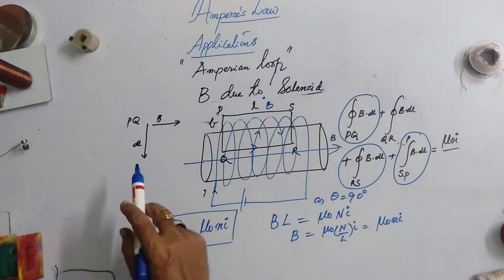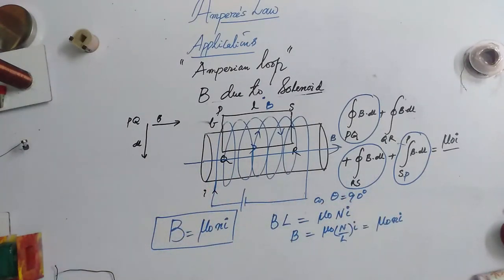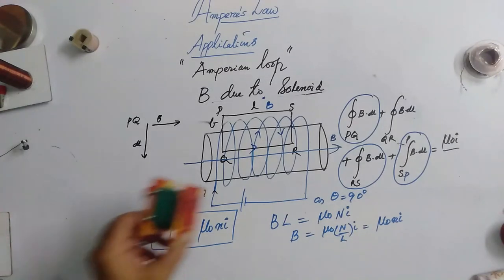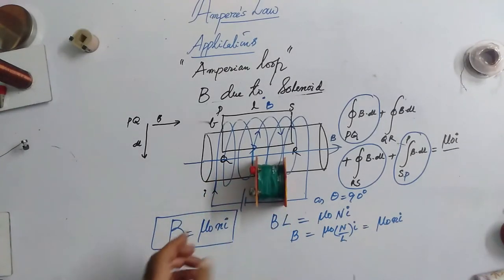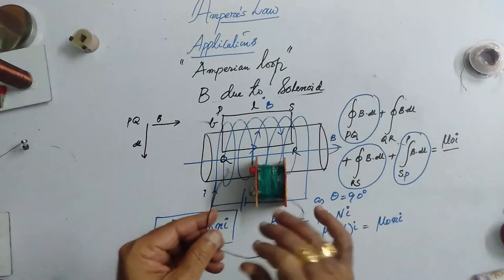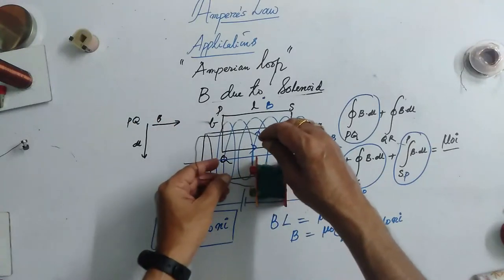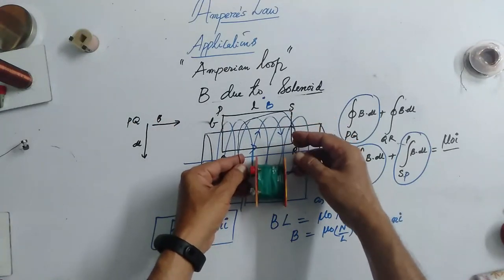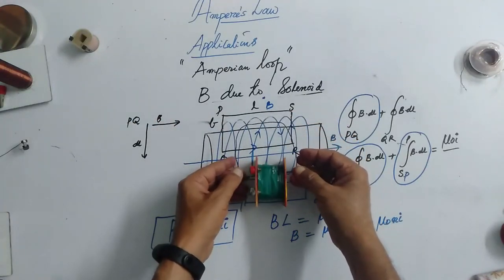So, this is the second application. We try to visualize the Ampere loop here. Now, let's consider that this is the solenoid. Actually, let's consider that this solenoid is very long. And you are taking the loop like this.